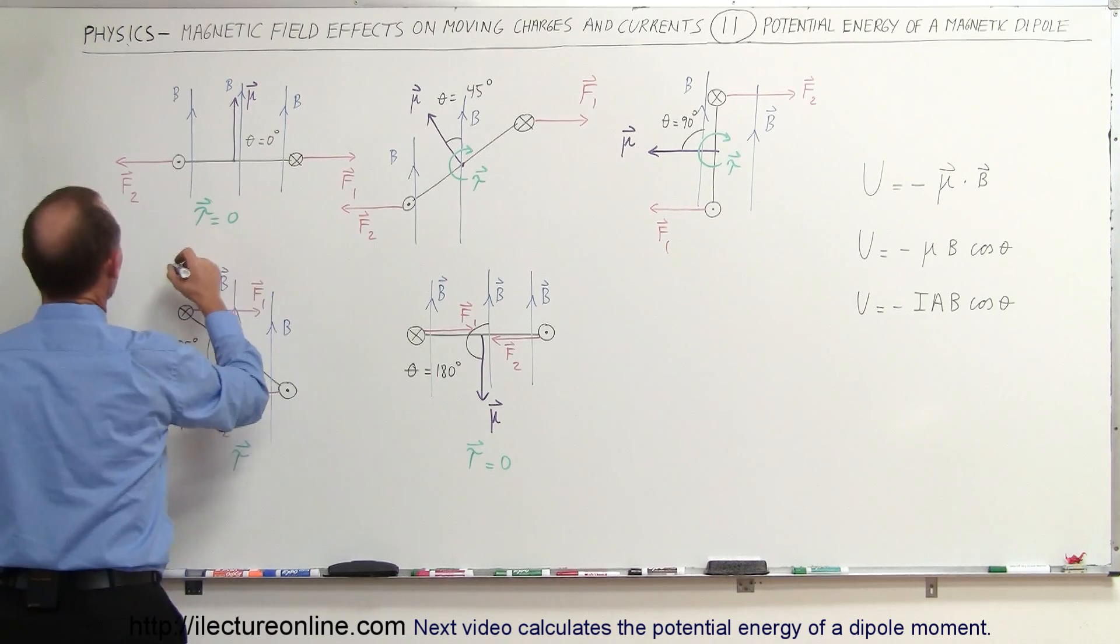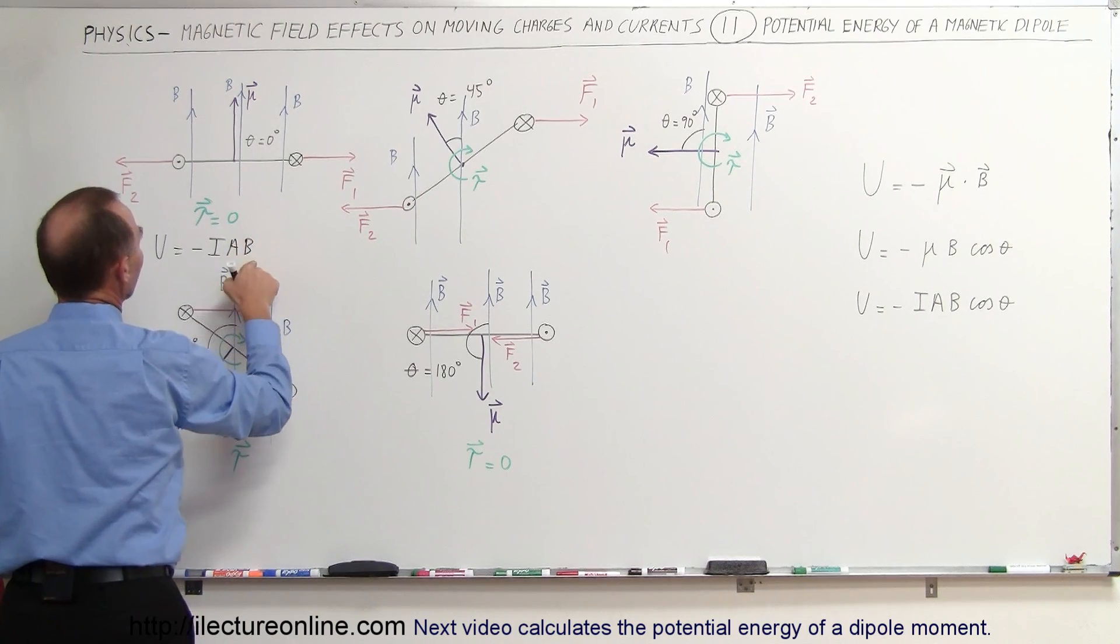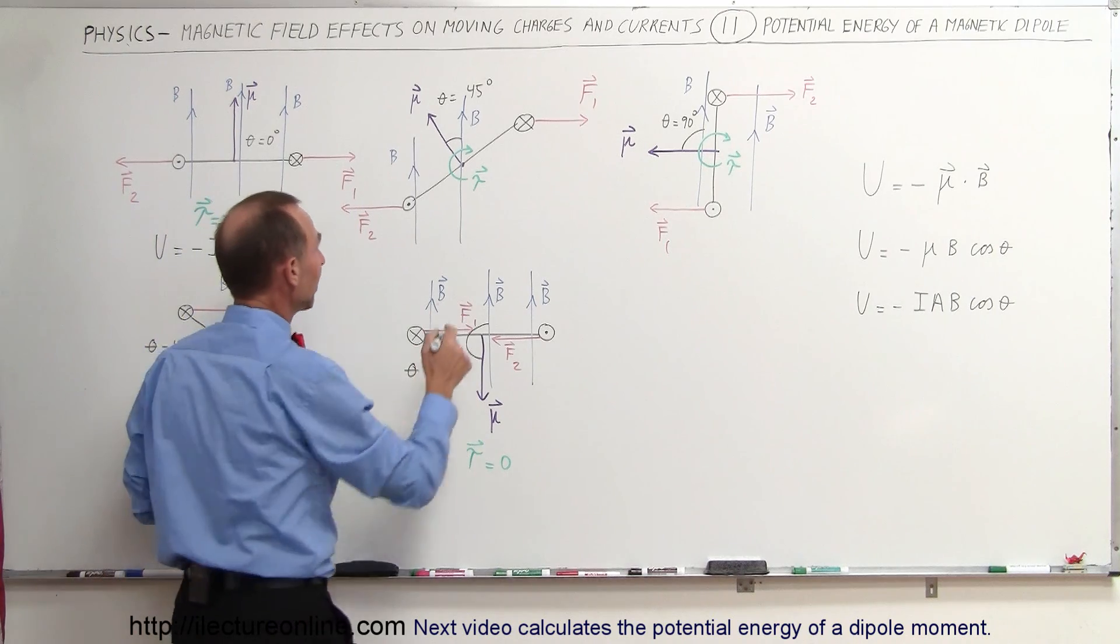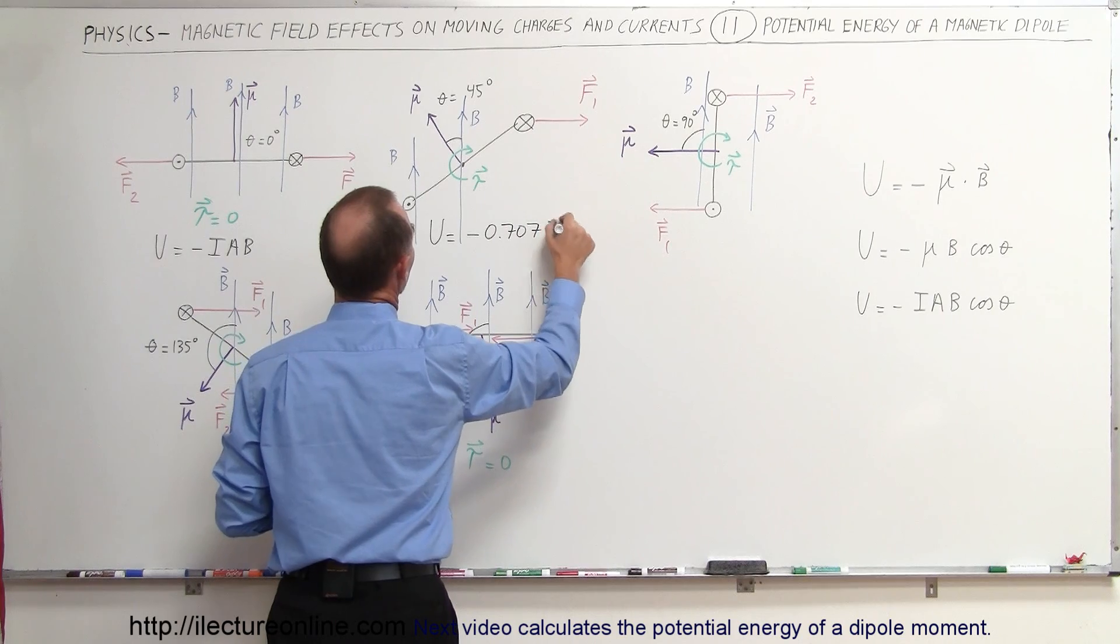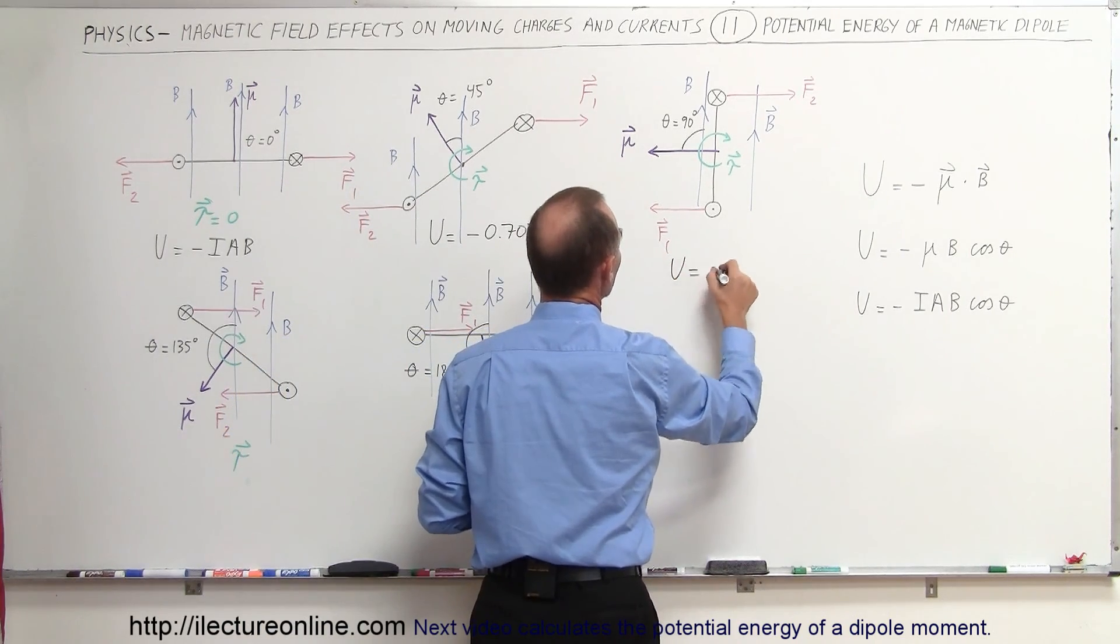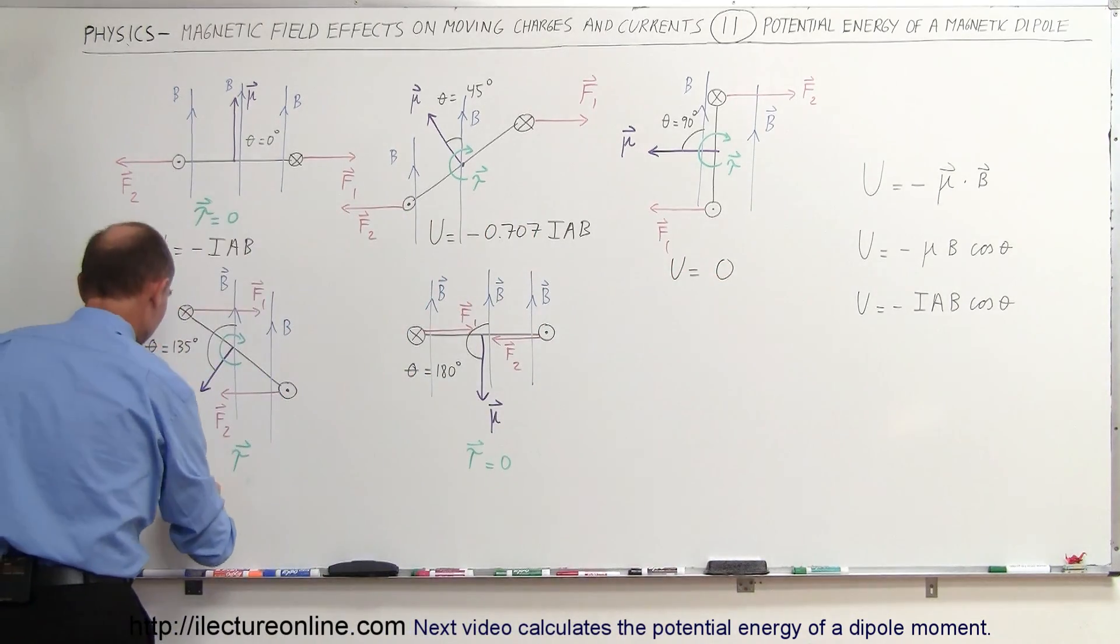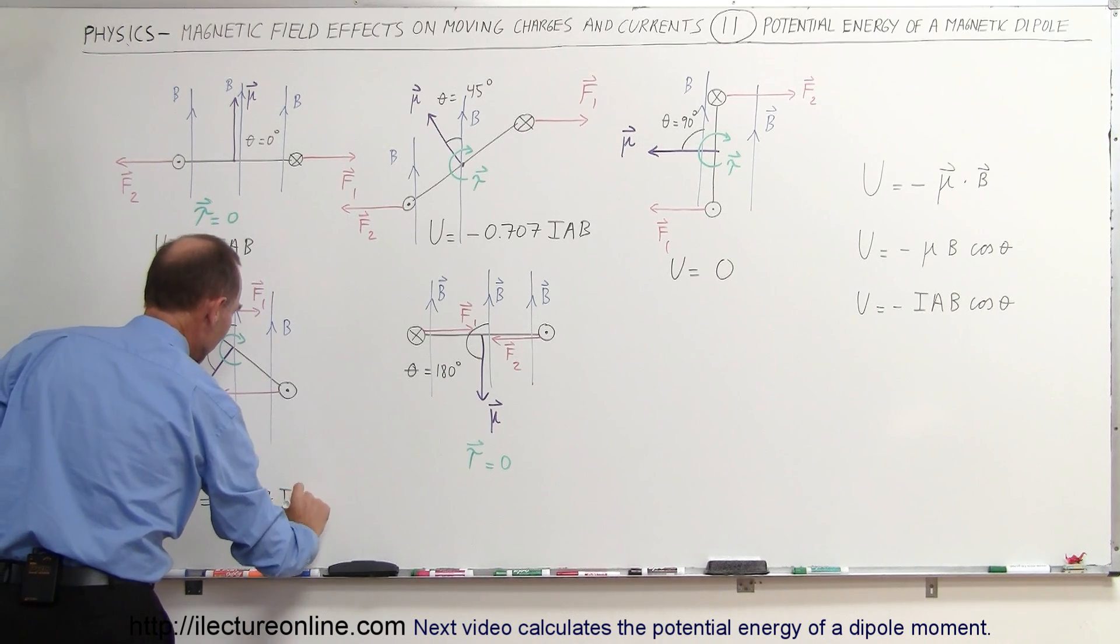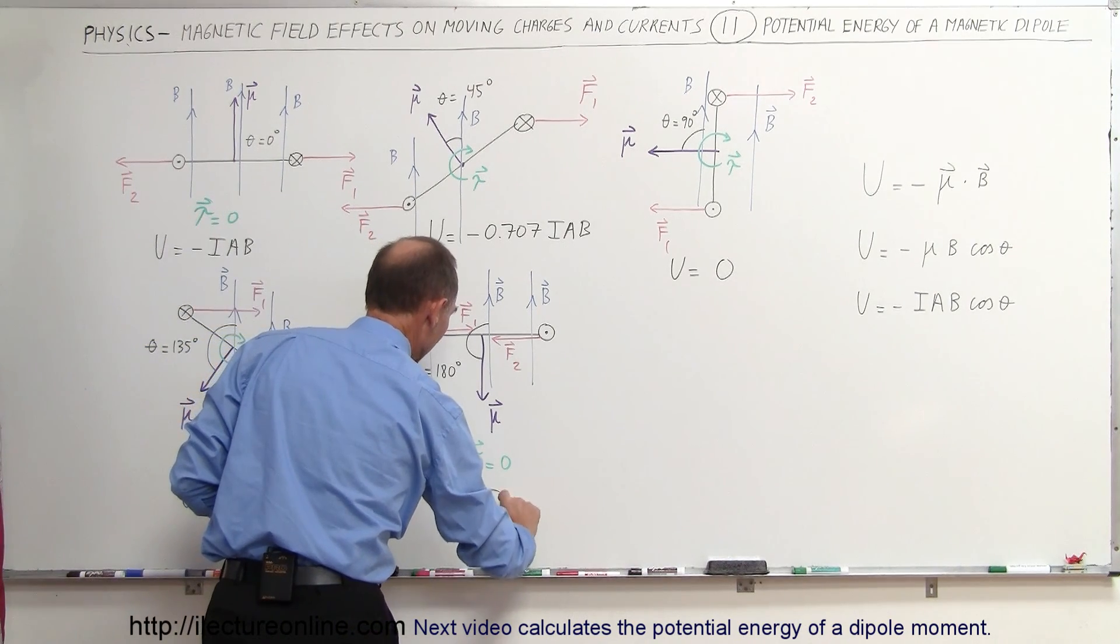So let me write this in. So at this point, we have the energy equal minus IAB, that's the maximum negative value. Over here at a 45 degree angle, you know that the cosine of 45 degrees is 0.707, so U would be equal to minus 0.707 IAB. And over here we can say that U is equal to 0, because that's the cosine of 90 degrees. Here we can say that the energy is equal to the positive 0.707 times IAB, and here we can say that the total energy U is equal to IAB.